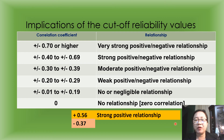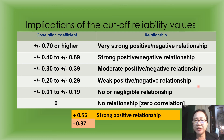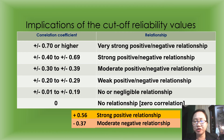Another example: if we obtain a value of negative 0.37, and 0.37 lies in a certain range on the scale, we interpret it as a moderate negative relationship — negative because our value here is negative.